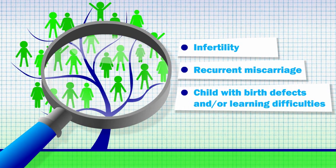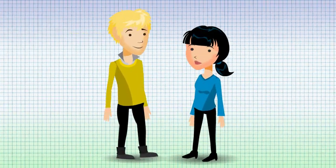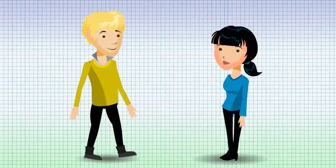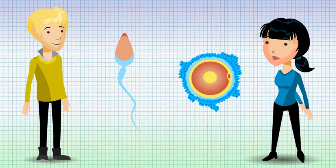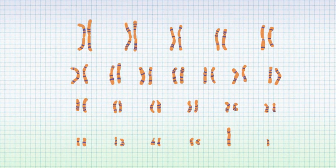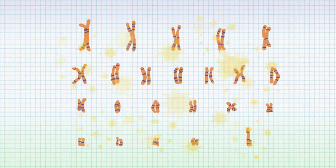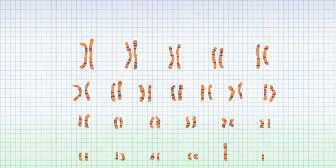In order to become a parent, you have to make a mature egg or sperm. Normally, each pair of chromosomes come together, exchange genetic material known as crossing over, and divide.